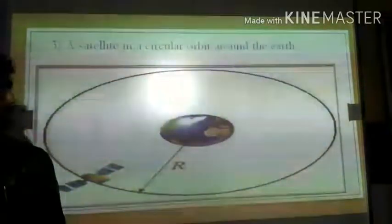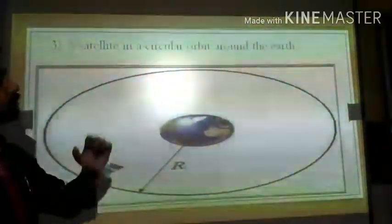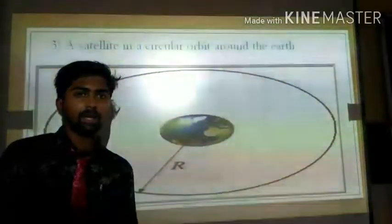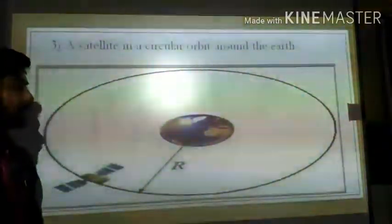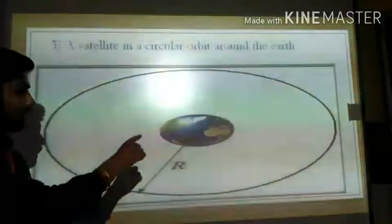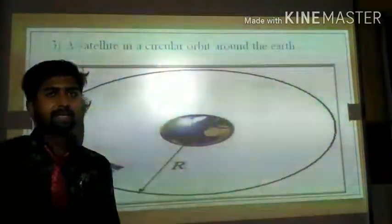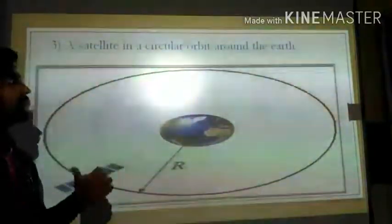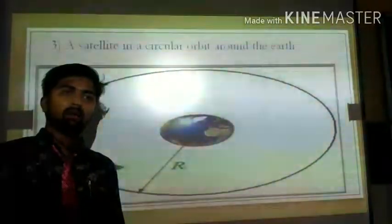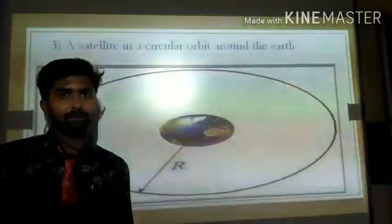Next, a satellite in a circular orbit around the Earth. A satellite moves in a circular orbit around the Earth, so the satellite's motion is a uniform circular motion.